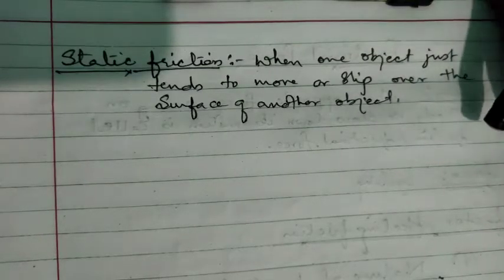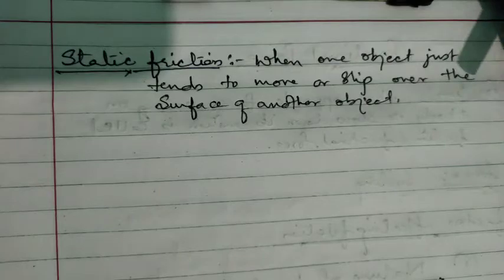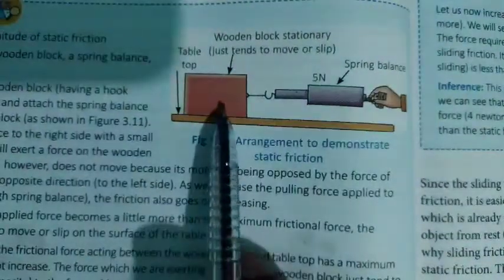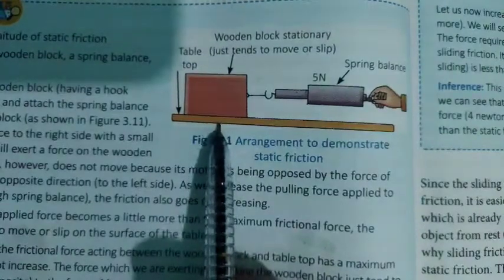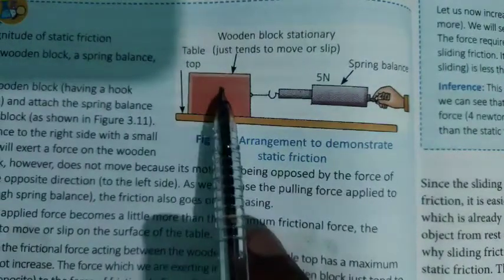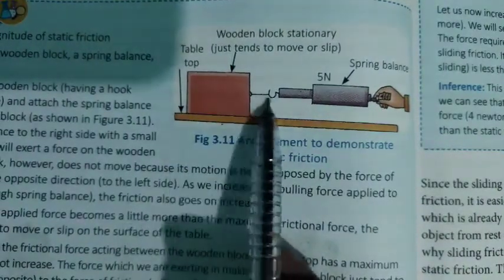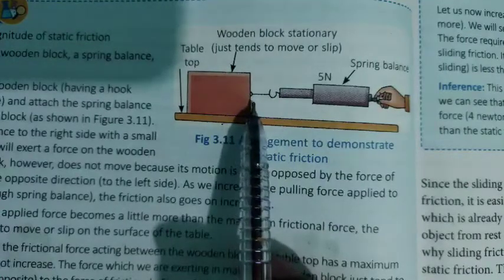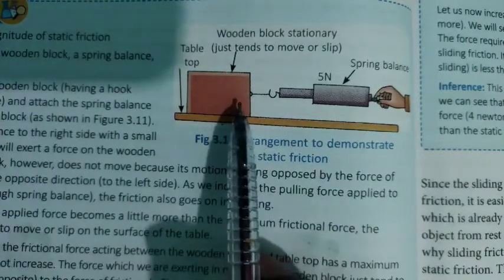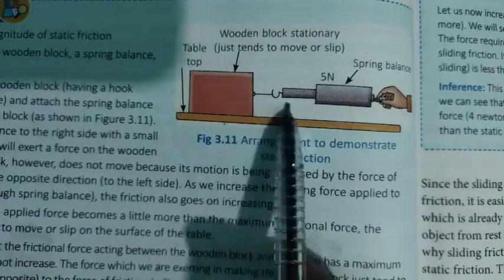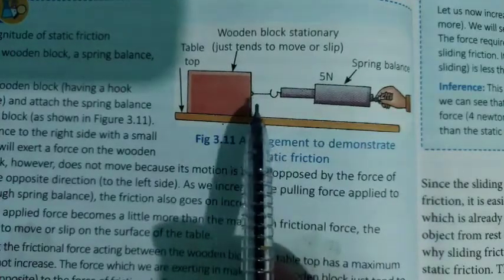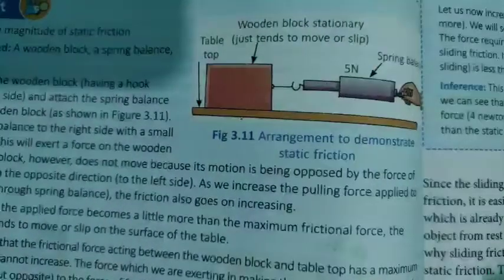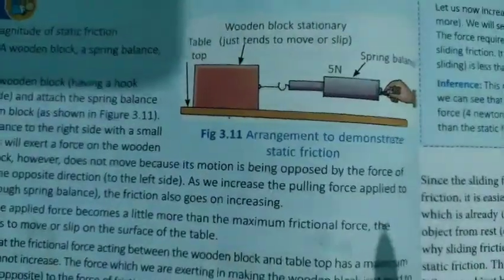You can see the example given in your book on page number 56. Here there is a smooth surface and an object placed on it. The object will either slip or slide over the surface. This type of friction is called static friction.